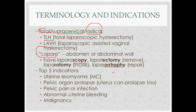For indications, consider alternatives to hysterectomy. For uterine leiomyoma, you could try myomectomy or uterine artery embolization. For pelvic organ prolapse, you can try a pessary. For pelvic pain caused by endometriosis, you could try a GnRH analog. For abnormal bleeding, you could try endometrial ablation. For malignancy, you could do something like conization instead of hysterectomy.